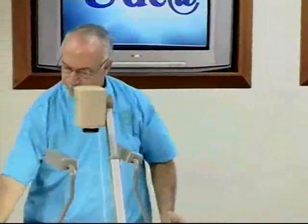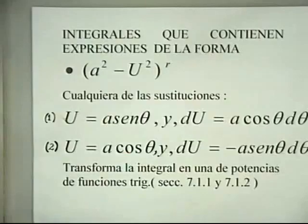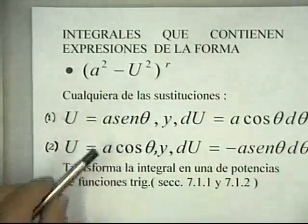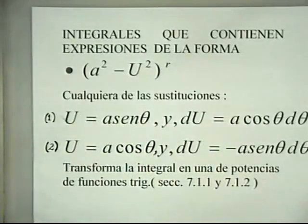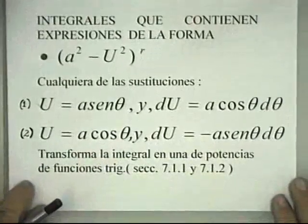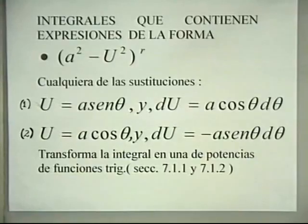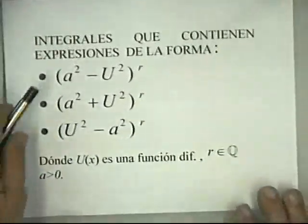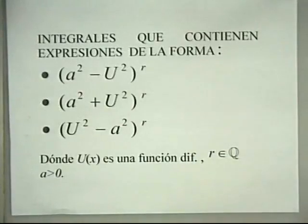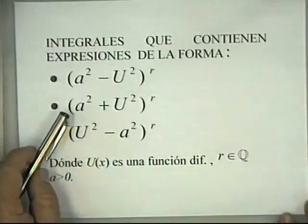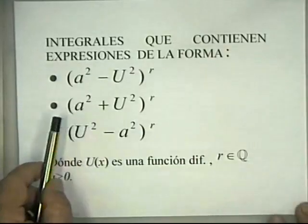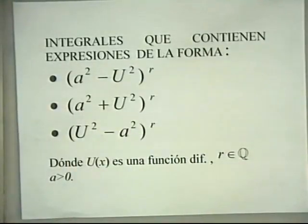Este es entonces el primer caso: cuando en el integrando aparece cualquier expresión de la forma a² menos u² elevado a la r, cualquiera de las sustituciones u igual a a·seno(θ) o u igual a a·coseno(θ) transforma la integral inicial en una integral que contiene potencias de funciones trigonométricas. Se presentan tres casos en total, y vamos a mirar el segundo: integrales que contienen expresiones de la forma a² más u² elevado a la r.